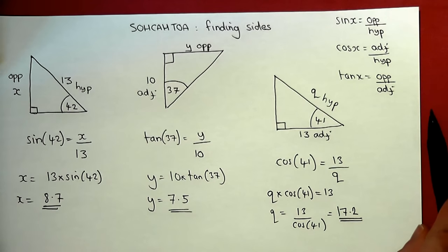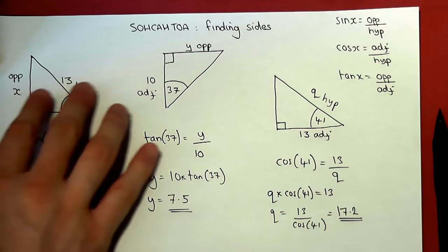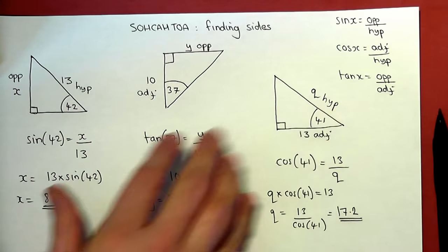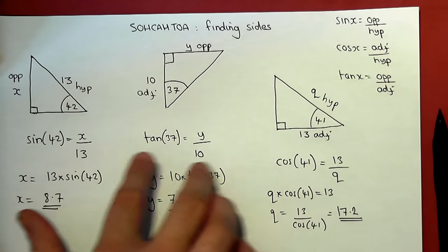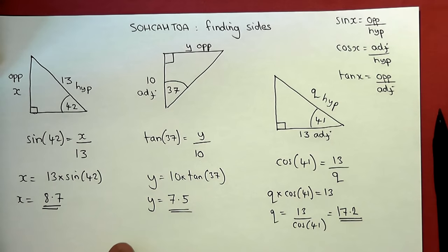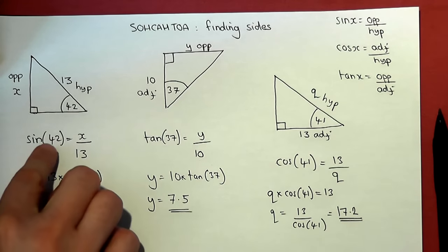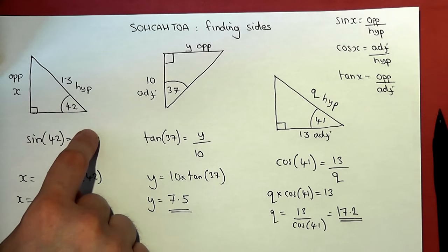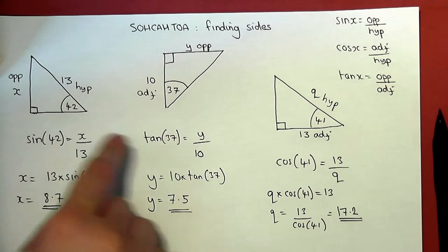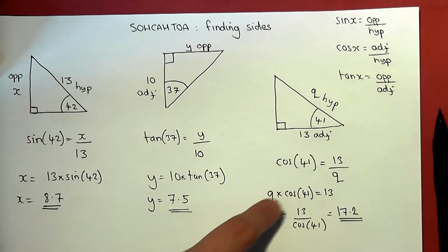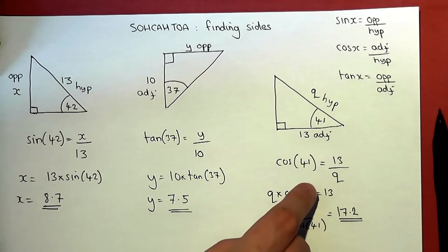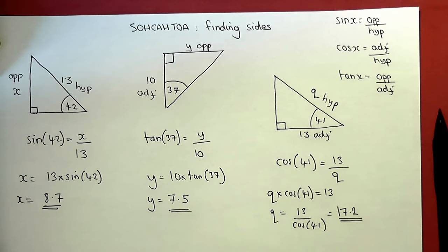The skills are to identify the two sides in the question, write down the equation, and then solve it — either using the one-step method when the unknown is on top of the fraction, or the two-step method when the unknown is beneath the fraction. That is SOH CAH TOA for finding sides.